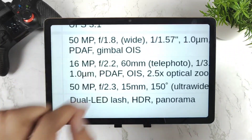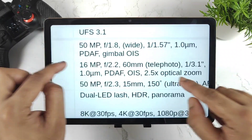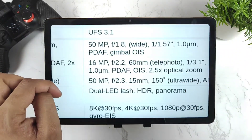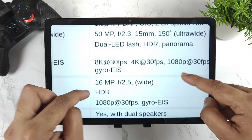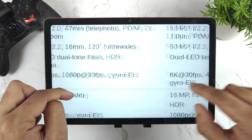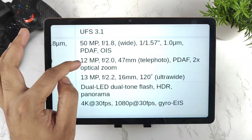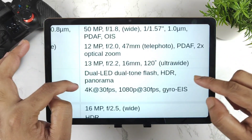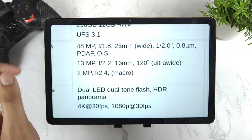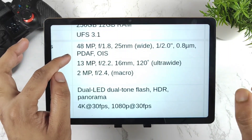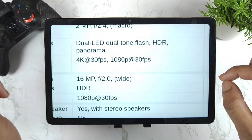For cameras, the iQOO 9 Pro will feature gimbal stabilization — a physical gimbal sensor — along with a telephoto lens, a 50MP ultra-wide at 150 degrees, 8K video recording, and a 16MP front camera with 1080p at 30fps. The iQOO 9 will have a 50MP main sensor, a 12MP plus 13MP combination, 4K 30fps recording, and a 16MP front camera. The iQOO 9 SE will have a 48MP plus 13MP plus 2MP setup with 4K 30fps and 1080p 30fps recording, and a 16MP front camera.